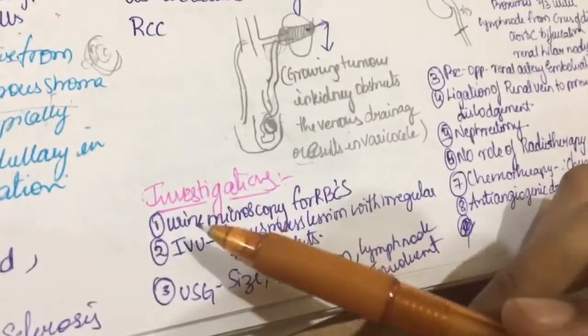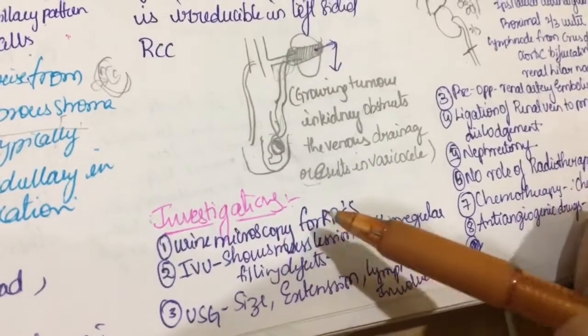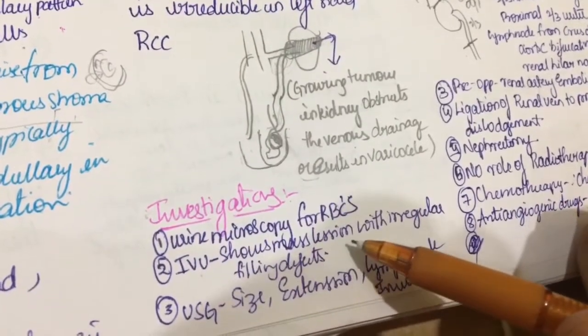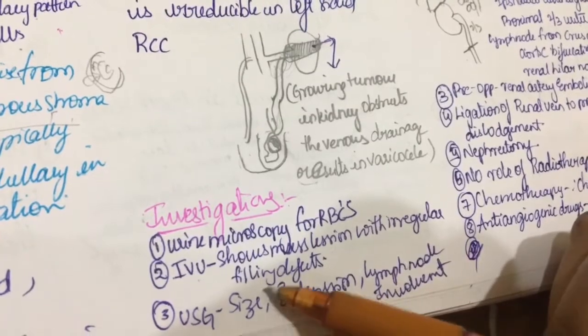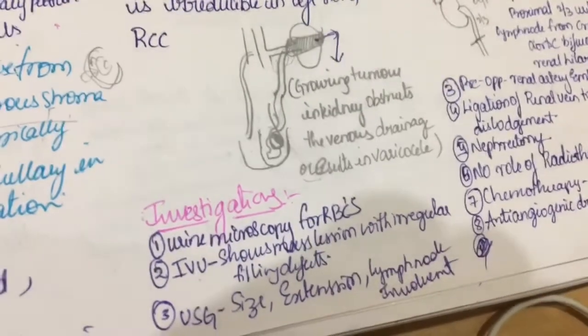Right side where it opens directly into the inferior vena cava, there is no varicocele in the right side. Investigation, urine microscope for RBC. IVU shows mass lesions with irregular filling defects.